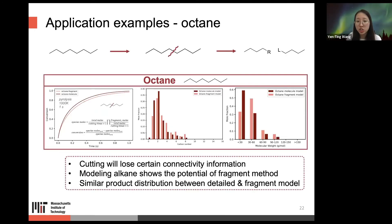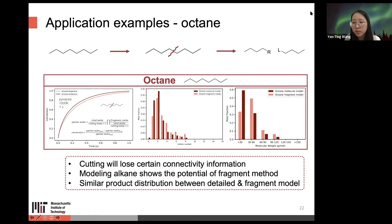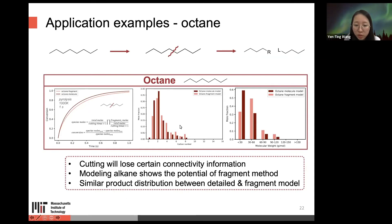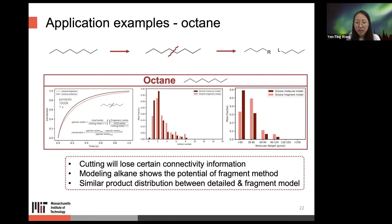Here are some application examples. Starting with the simplest case — octane — cut at the midpoint into R and L fragments. The conversion comparison plot shows that the fragment model has very close results compared with the molecular octane model. By comparing molecular weight distribution or carbon distribution, cutting does lose certain connectivity information, but the fragment method shows potential for modeling and gives a similar product distribution between the detailed and fragment model.